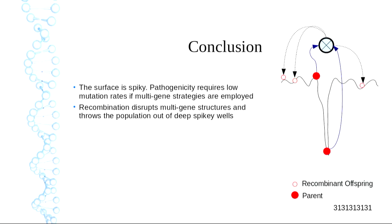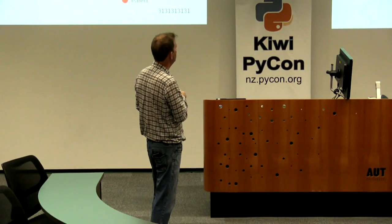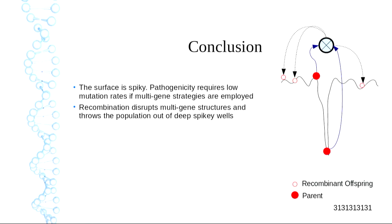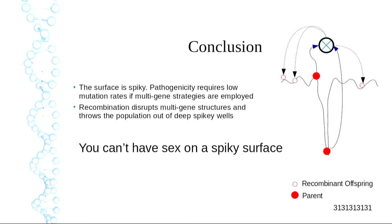In conclusion: the surface in these arms races is spiky — it's not smooth. If you have mutation, you're going to get thrown out of that spiky little well; you can't stay there. Recombination is going to do the same thing. Recombination disrupts multi-gene structures; mutation breaks them too. So you have to have a very low change rate. You can't have sex on the spiky surface — it just doesn't work. Class 3 machines are spiky surfaces; class 4 machines have smooth surfaces.